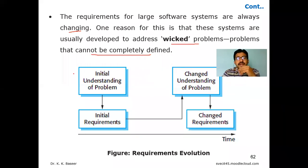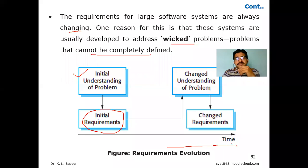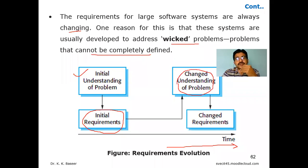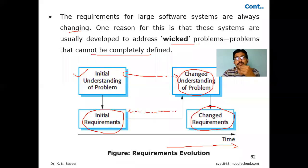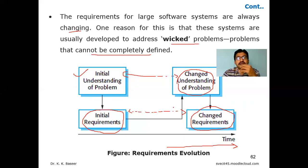As shown in the figure, initially you understand the problem and based on that understanding you collect initial requirements. As time goes on — along the x-axis — there is variation in understanding the problem. Initially you understood it one way, but after some time period you change your way of understanding. If you thought about it wrongly and need to change your understanding, then there is also a change in the requirement. This gap in understanding over time means planning is required.